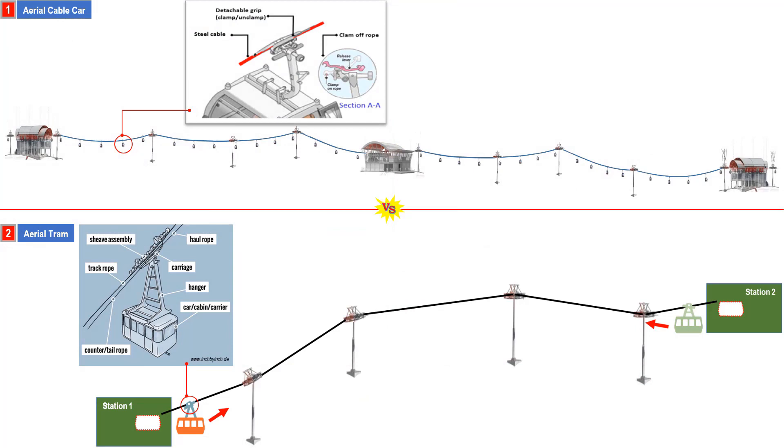First, let us look at the differences between the two major types of ART: a detachable aerial cable car and a non-detachable aerial tram. The aerial cable car has a detachable grip that detaches as it arrives at the station and attaches as it leaves the station. The aerial tram has a non-detachable grip that is permanently attached to the cable. The two cabins move back and forth between the two stations.